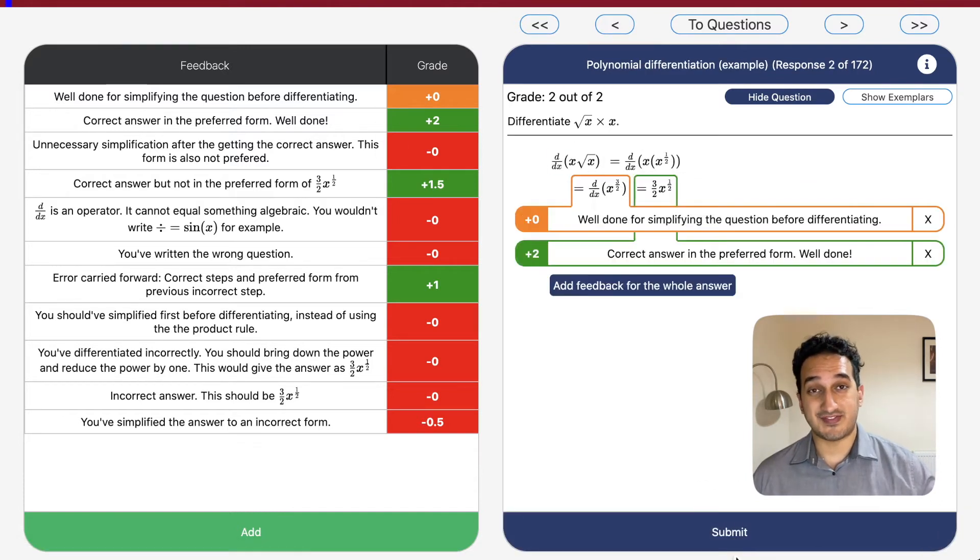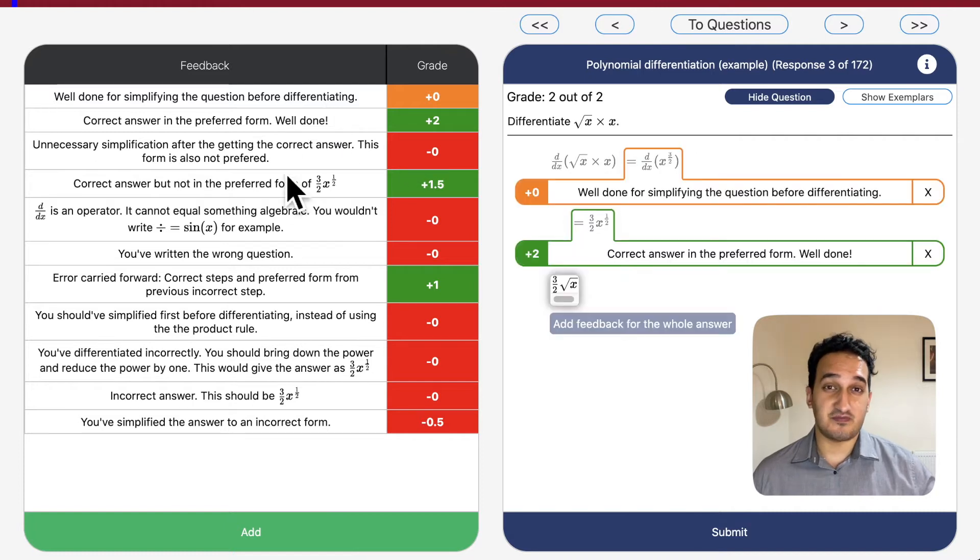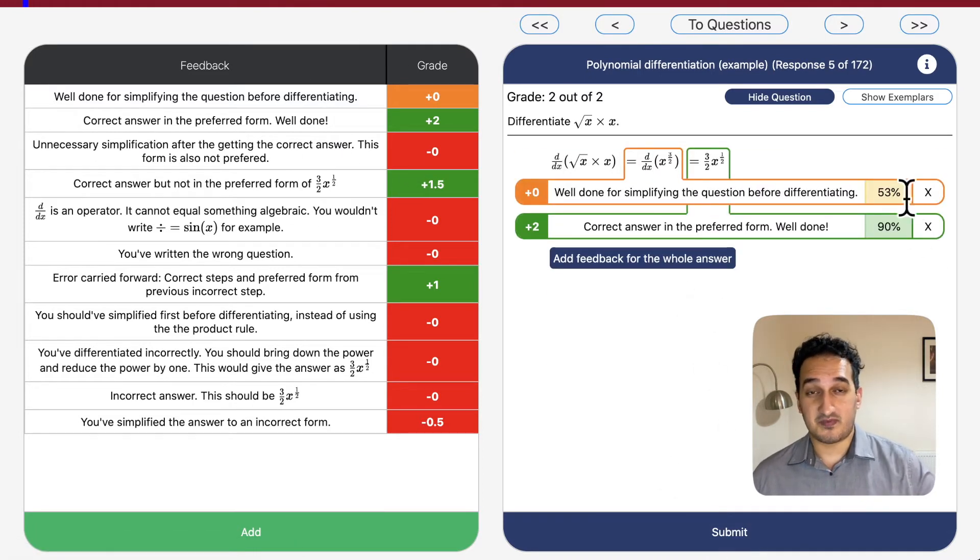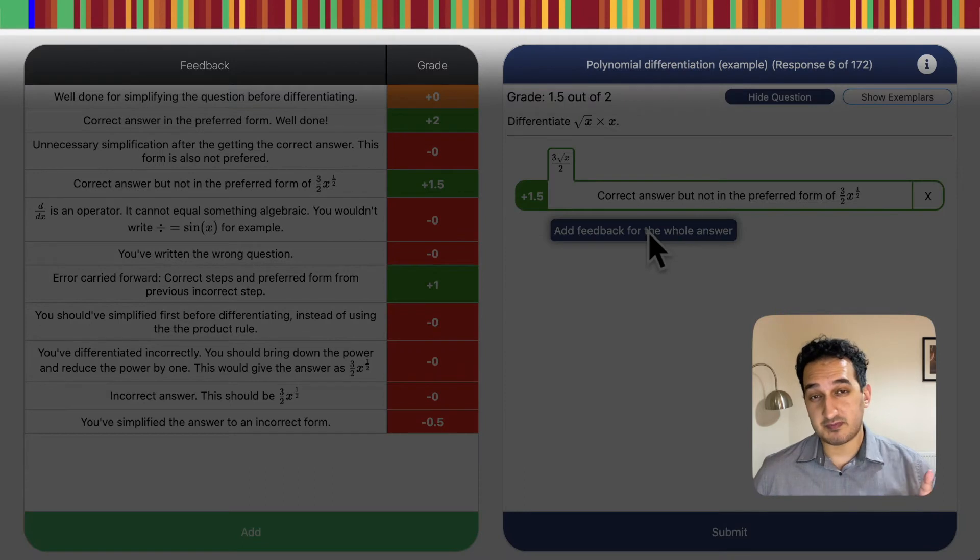Let's grade a few more answers and you can see by question 5 the platform has already learnt. It's suggesting you some feedback to give and those percentages are the relative confidence that the system has. If you take a look at the progress bar now, you'll see how much work has already been done for you.